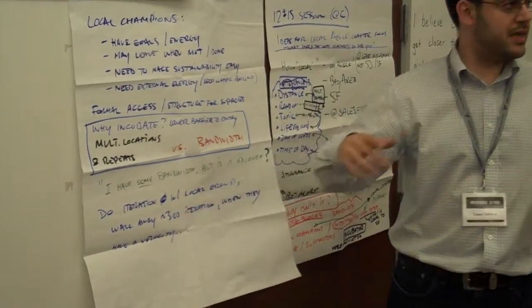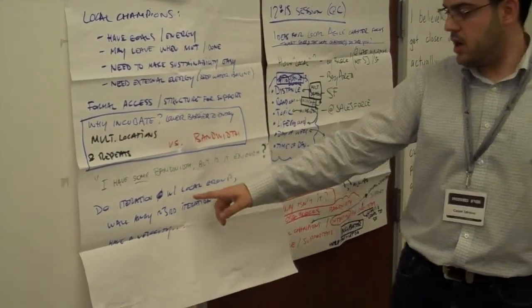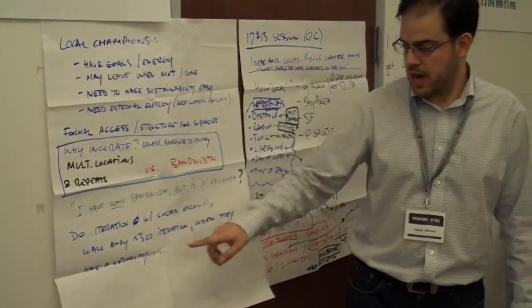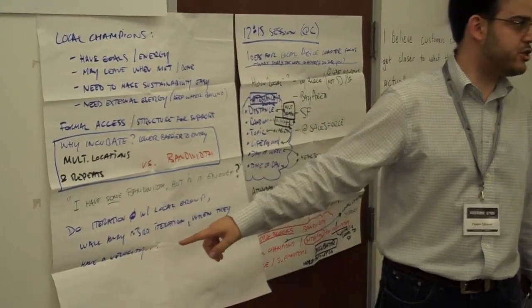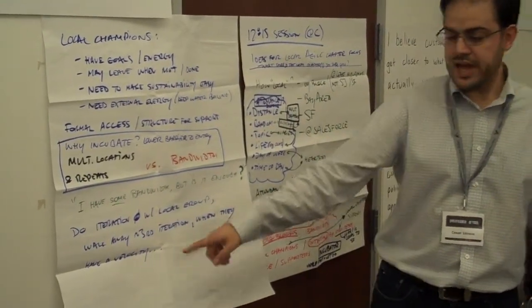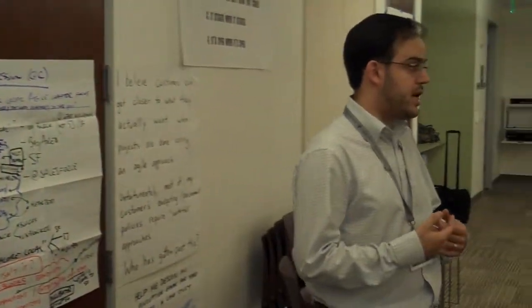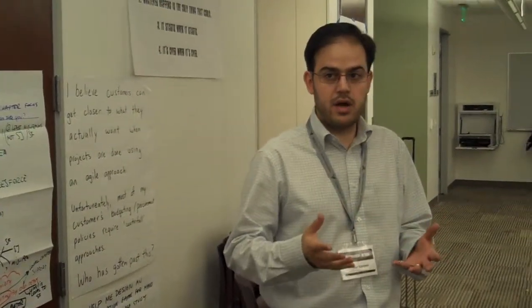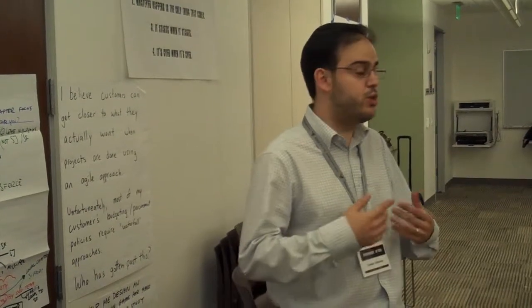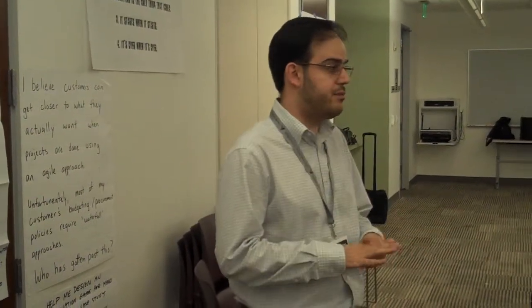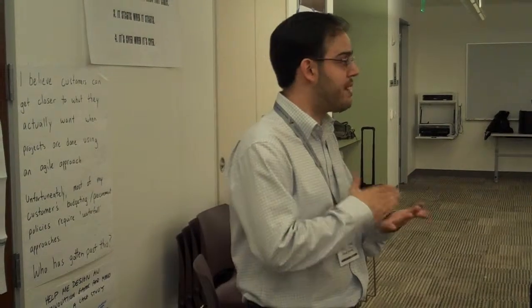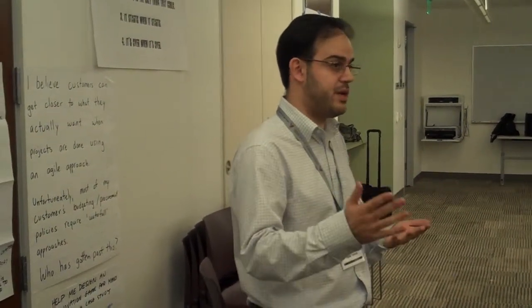Do an iteration zero as an existing local chapter with some other local group, then walk away at about the third iteration when they have a velocity. This is about how Bay of Helene, for example, can enable other chapters which we're not catering for geographically, so they have a very low barrier to entry and can get up to speed.